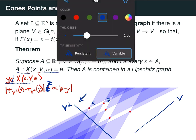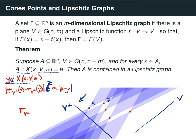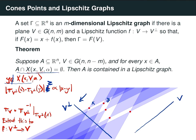Since the projection π_{v⊥} is bi-Lipschitz on A, it has an inverse function when restricted to the image of A under the projection. Taking the composition with the projection onto v gives a function mapping from a subset of v⊥ into v. We extend this using, for example, McShane's extension theorem to a Lipschitz function f from the m-dimensional plane v⊥ into v, and then it's not hard to show that the graph of f over v⊥ contains all the points of A.